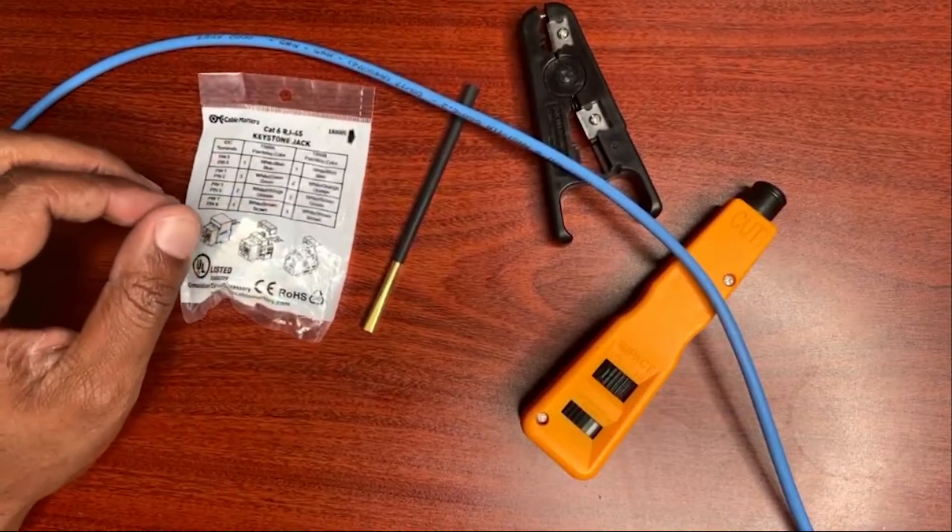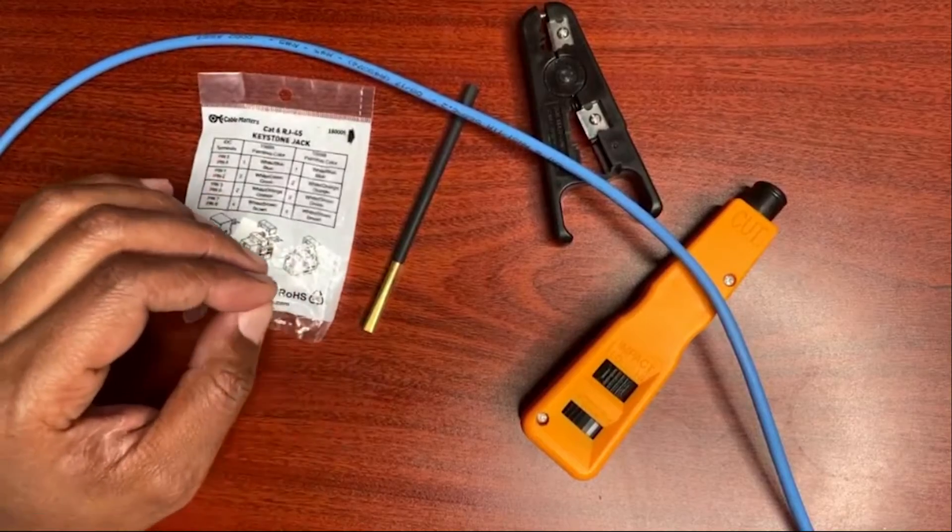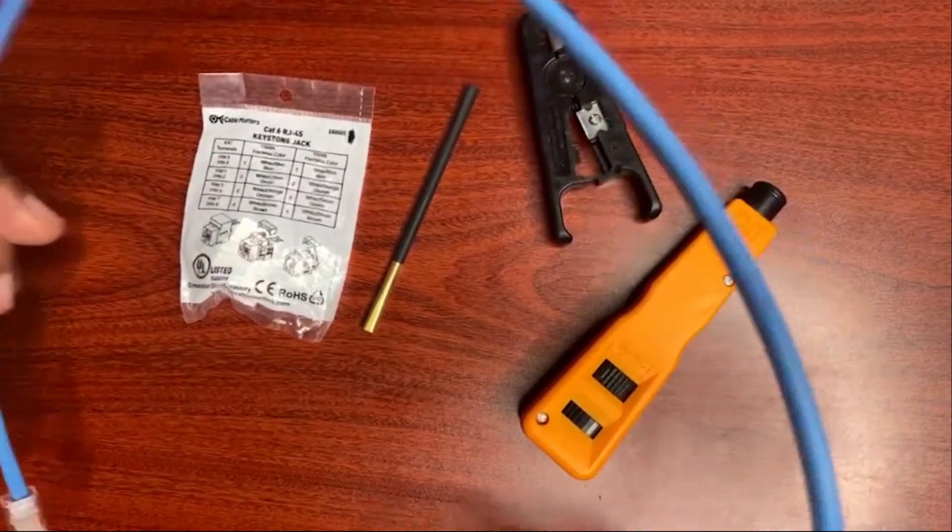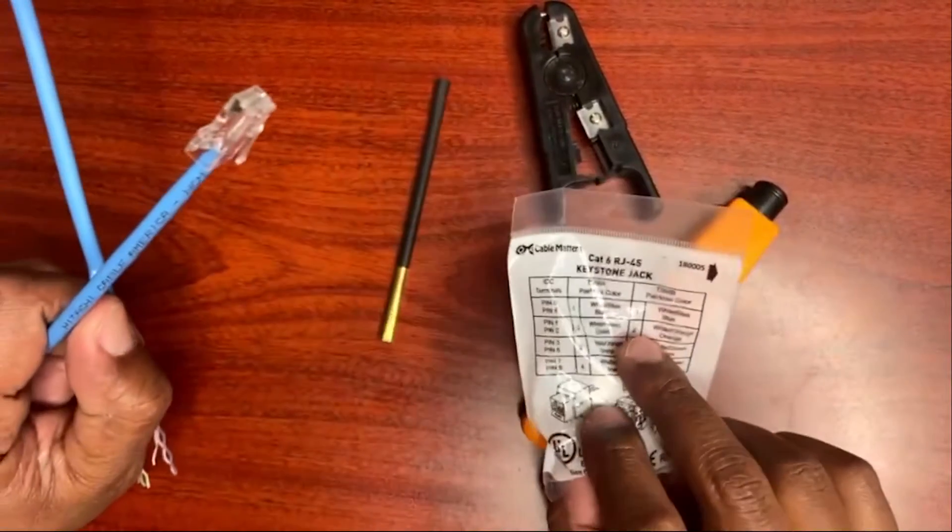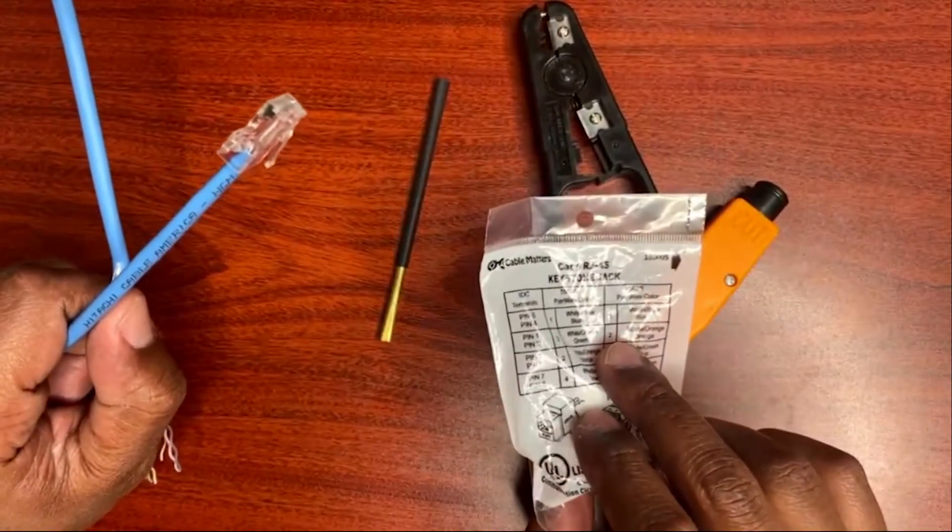Welcome to DFTK 101 as I discuss information technology, also known as IT. In today's episode, we're going to terminate a data cable by placing our keystone jack onto the other end of this cable.